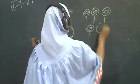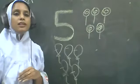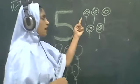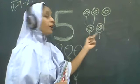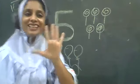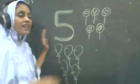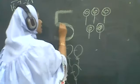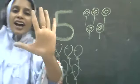One, two, three, four, five. What is this? Candy. So now let's count the candies. How many candies are there? Let's count together. One, two, three, four, five. There are five candies. So which number is this? Number five. Sleeping line, standing line and inverted C. This is number five.